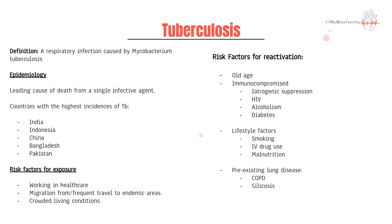Once you do get exposed and have latent TB, later down the line you can have a reactivation as secondary TB. The risk factors for that happening include being of an older age. Immunocompromised is the biggest risk factor — especially people with HIV and those on corticosteroid therapy or having some other form of immunosuppression. Lifestyle factors like smoking and IV drug use are also important, as well as pre-existing lung conditions like COPD.